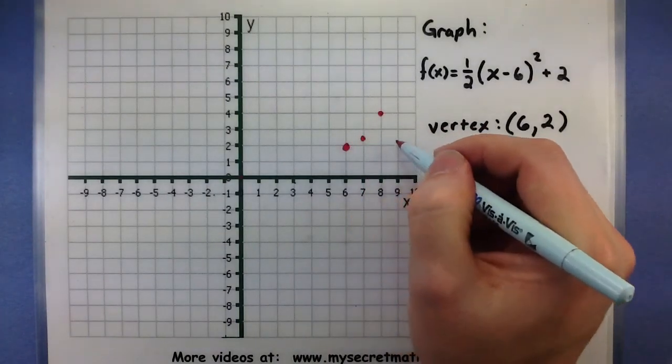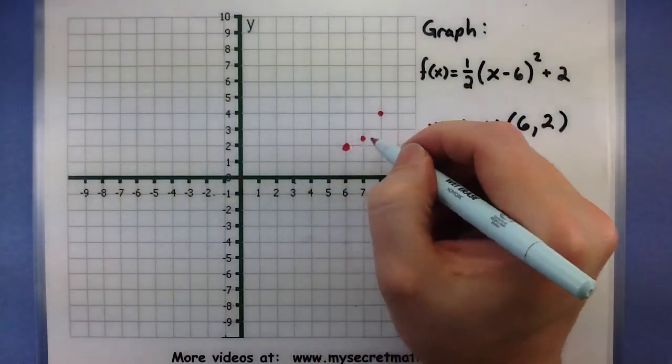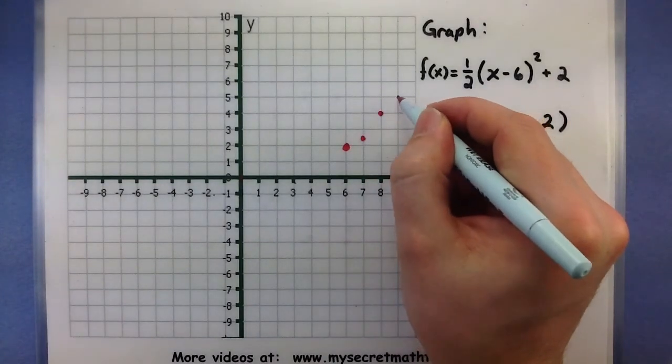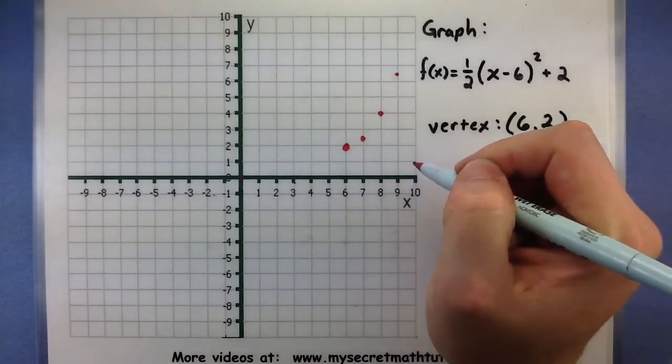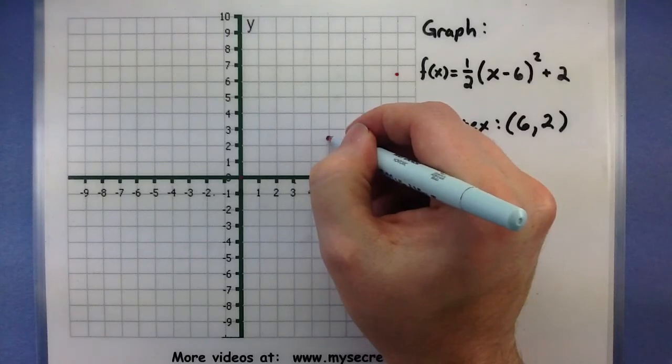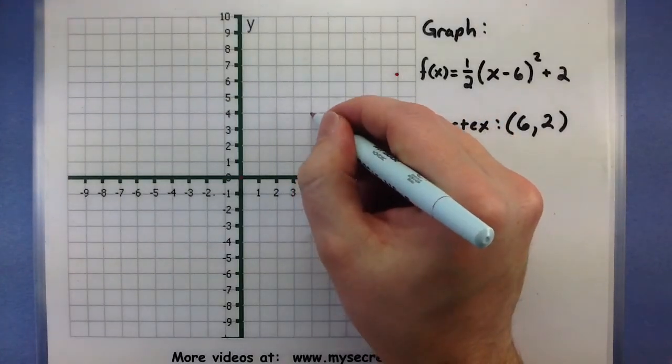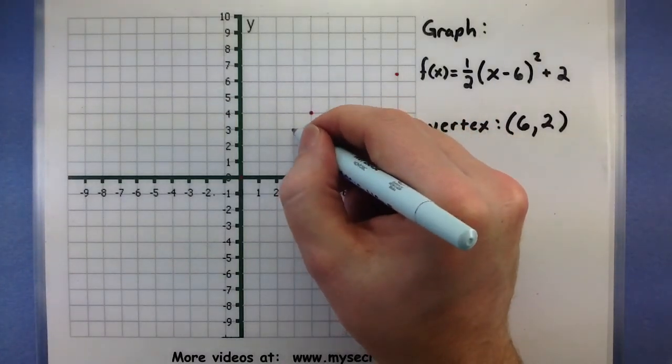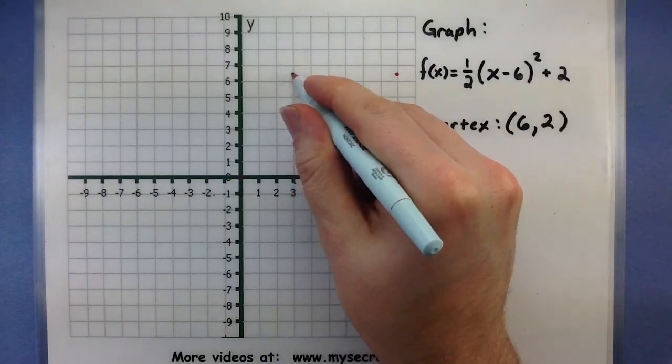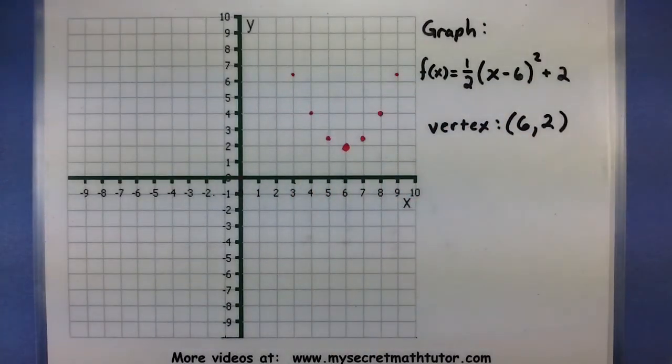Instead of 3,9, think of half of 9, 3, 4 and a half. So the effect is that it will make this parabola look a little bit wider than normal. There we go. And I know it's facing up because notice how the 1 half is positive.